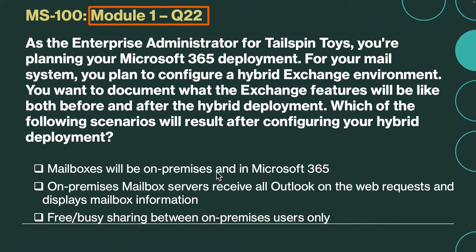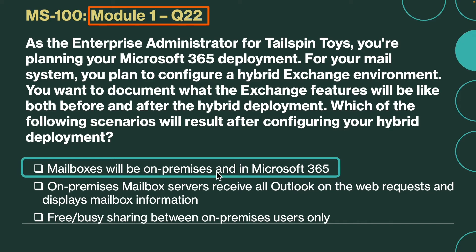Question number 22. As the enterprise administrator for Tailspin Toys, you are planning your Microsoft 365 deployment. For your mail system, you plan to configure a hybrid exchange environment and want to document what the exchange features will be like both before and after the hybrid deployment. Which of the following scenarios will result after configuring your hybrid deployment? The correct answer is mailboxes will be on-premises and in Microsoft 365. Mailboxes will be on-premises only before the hybrid deployment, and on-premises and in Microsoft 365 after the hybrid deployment.